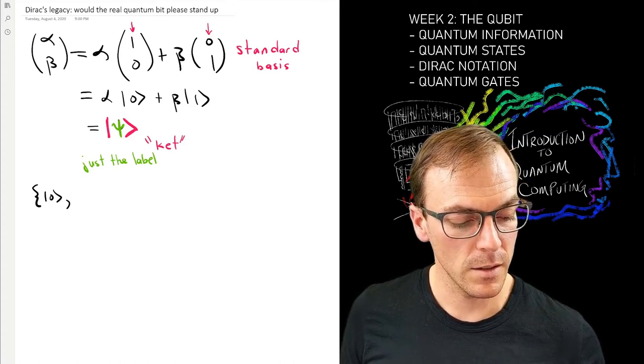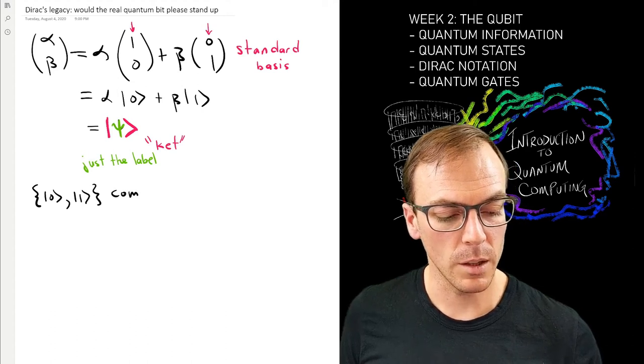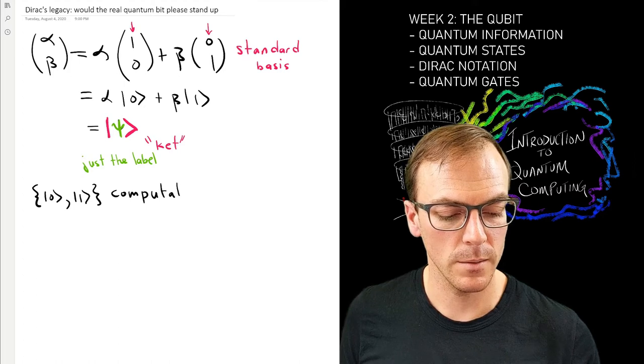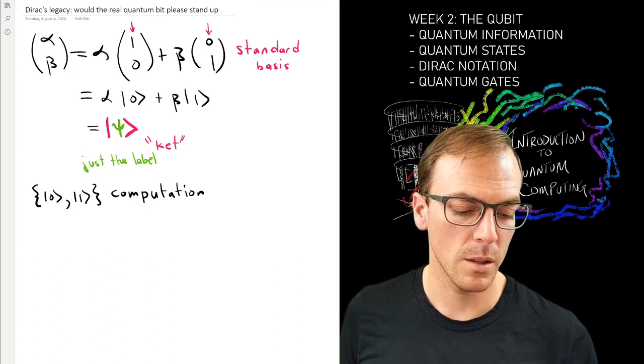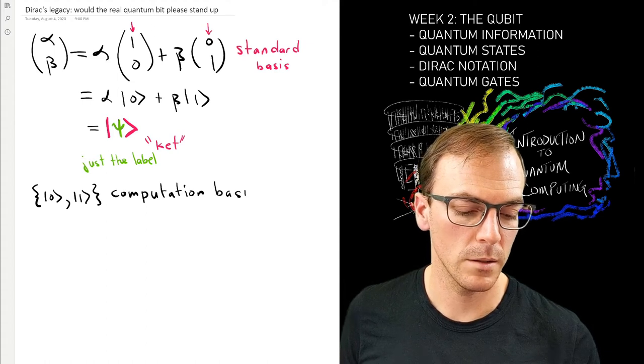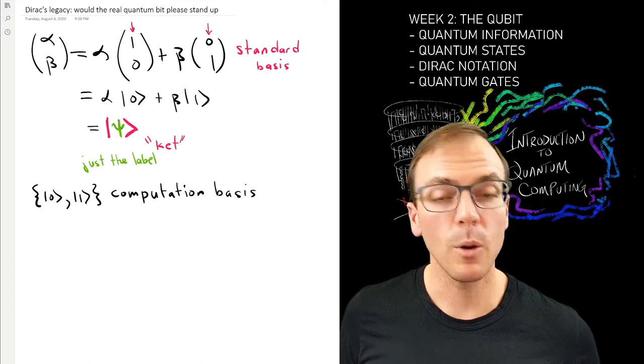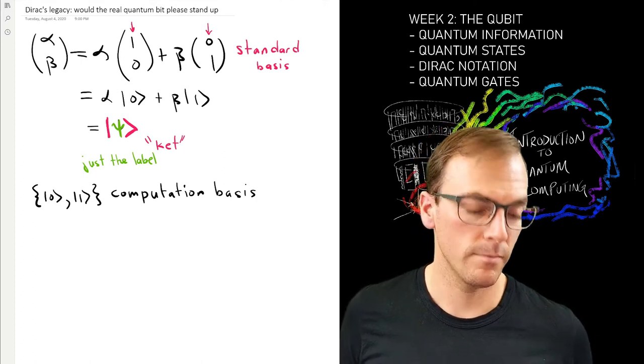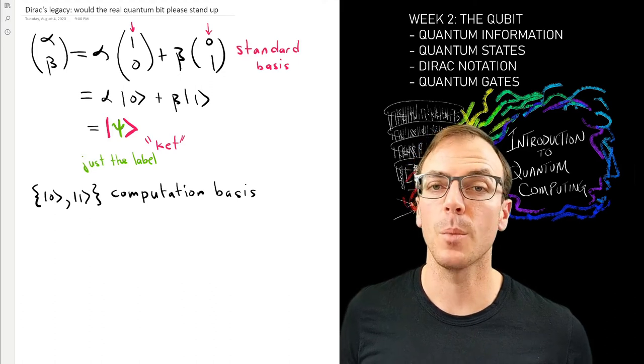You can see that the label of the basis is a bit of information, so that basis where we label it with a bit of information is called the computational basis. Standard basis same as computational basis, and whenever we do any calculations by and large, we're going to do them in this computational basis.